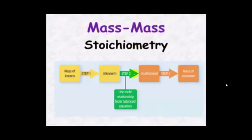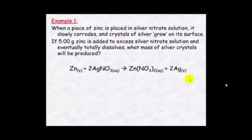For mass-to-mass stoichiometry: if you're given the mass of the known, you work out the number of moles of the known, then use the mole ratio to work out the number of moles of the unknown, and then work out the mass of the unknown. I'm going to take you through a couple of examples step by step.